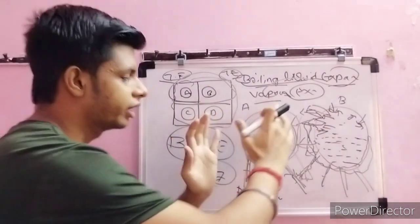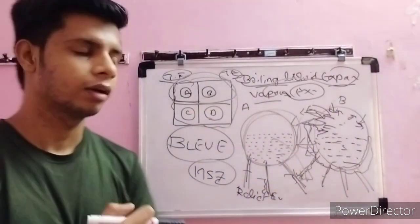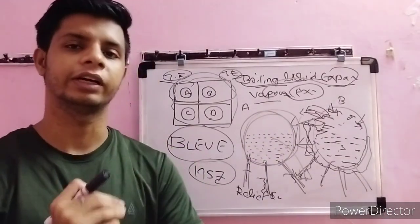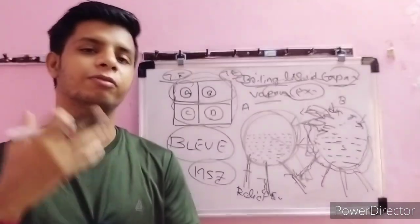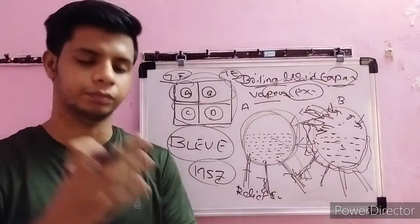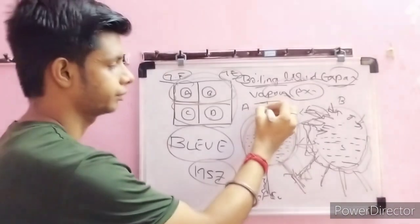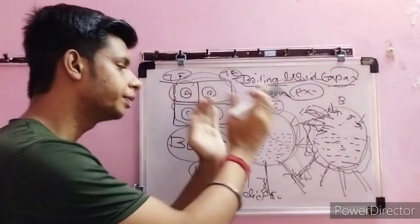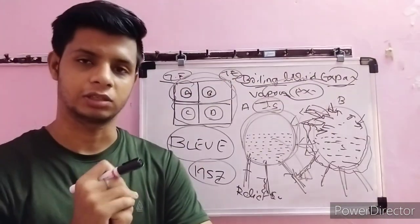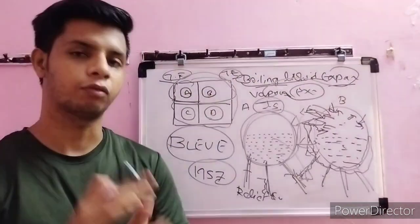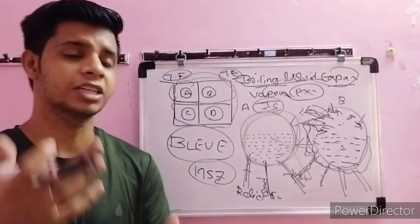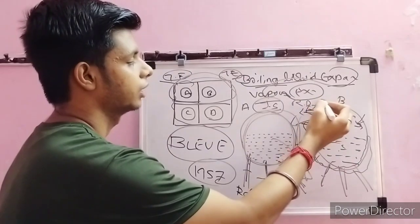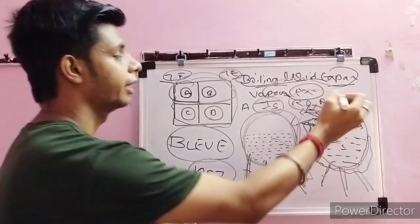How can we prevent BLEVE in industries? For preventing BLEVE, the first major thing is inherent safety. Inherent safety means we can increase the strength of materials used for construction of such tanks. We can also use rupture discs and relief valves.